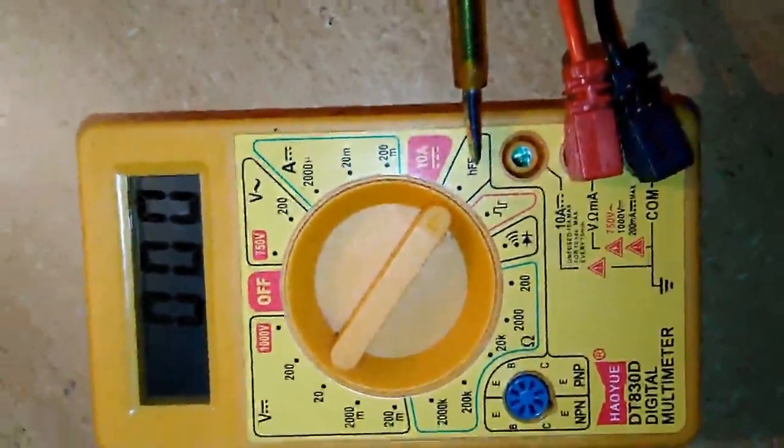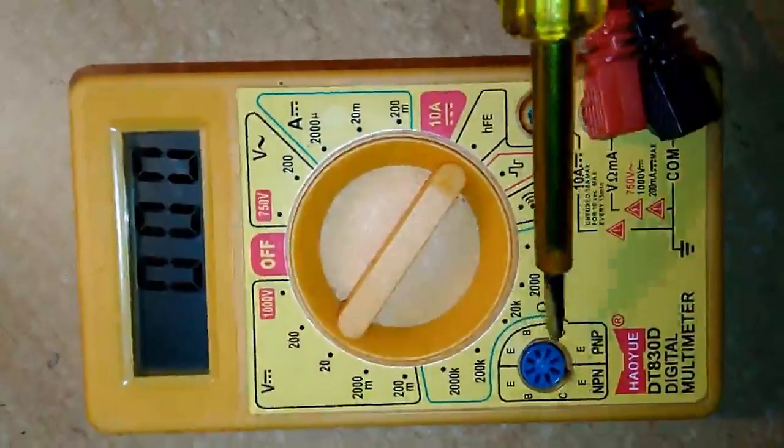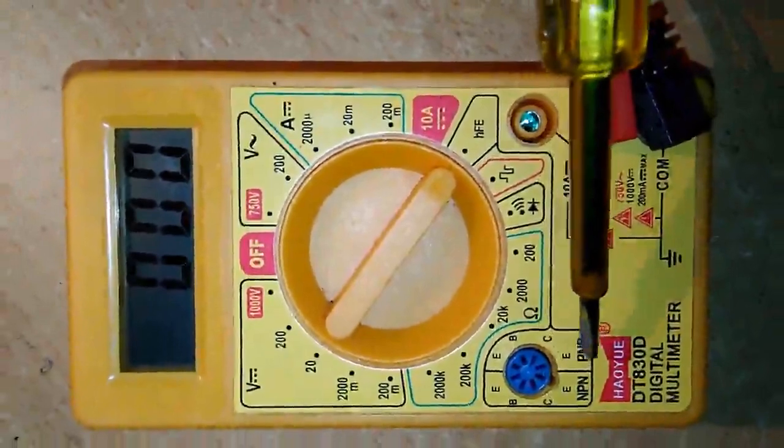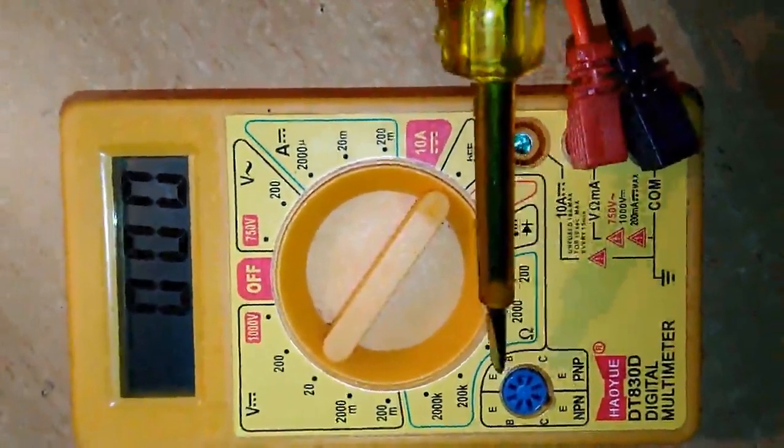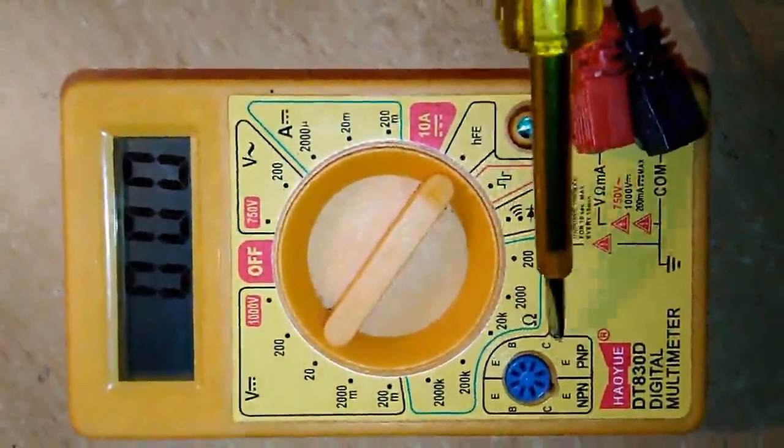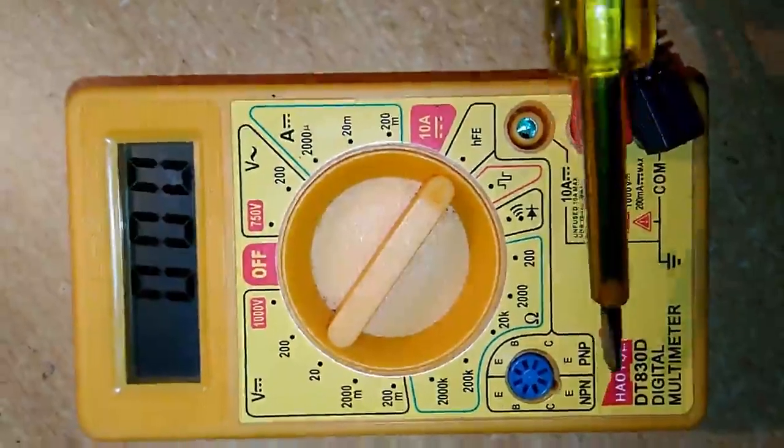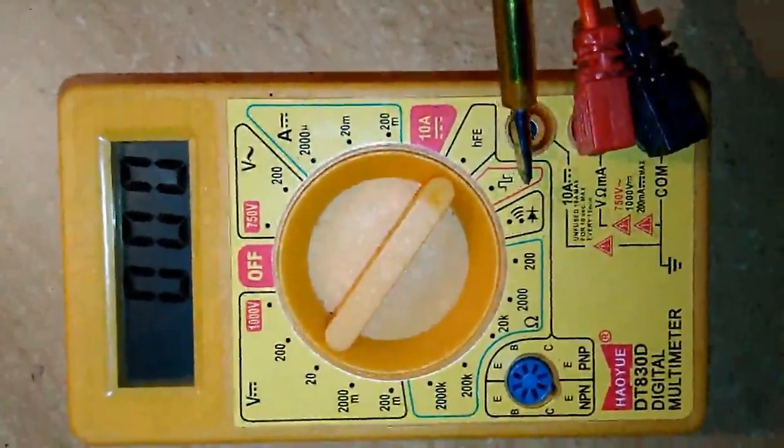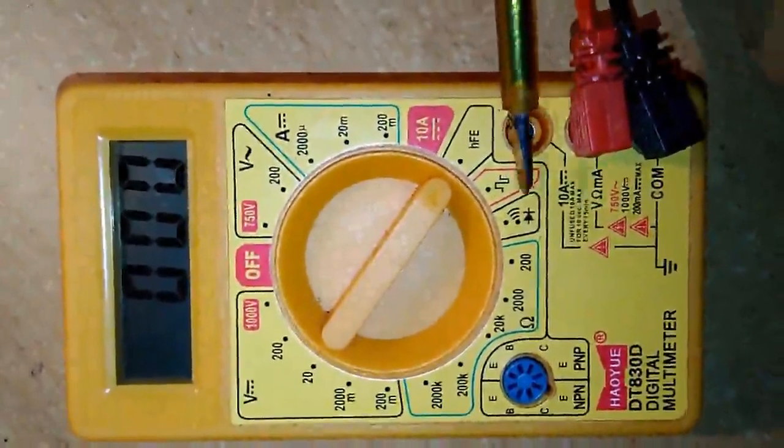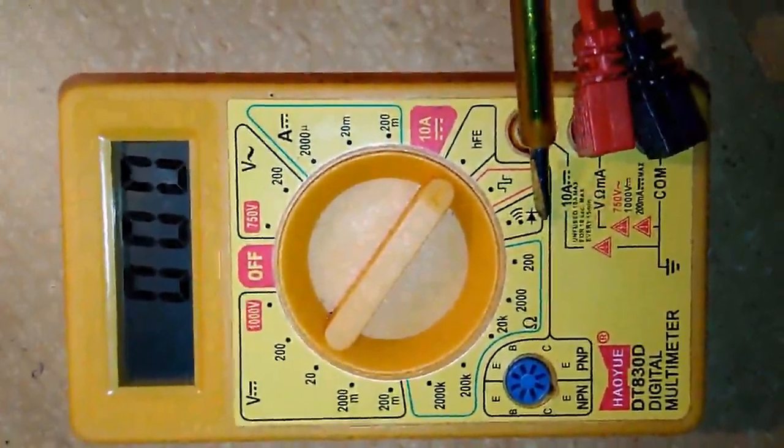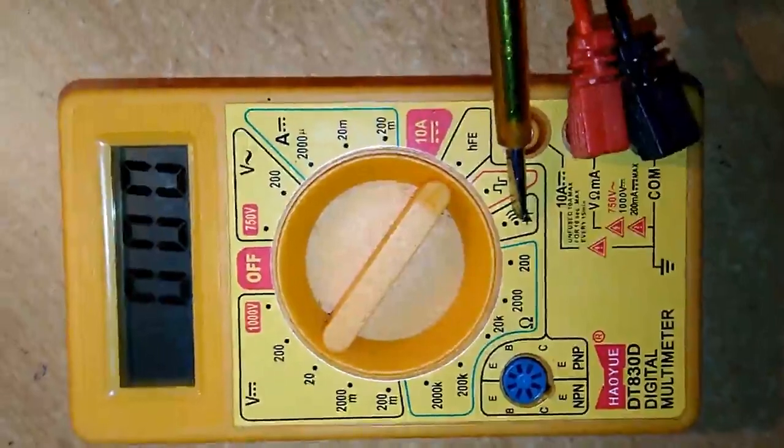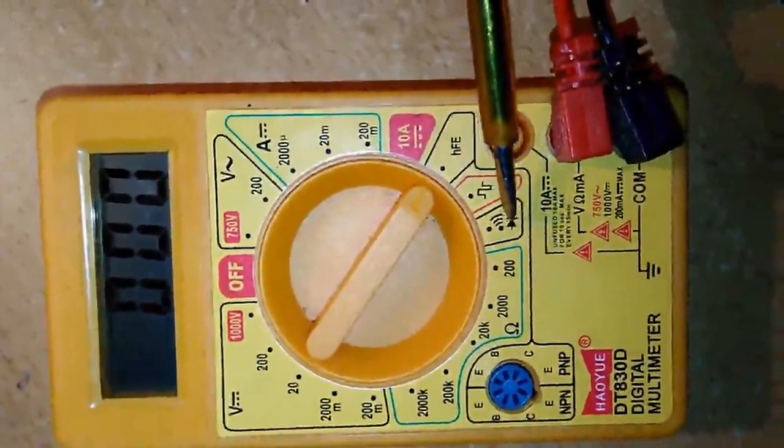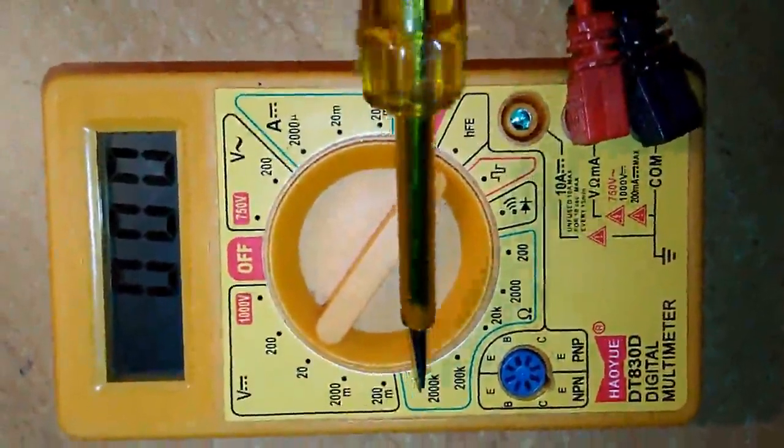Here HFE measures the value of transistor beta, that is current gain. We can measure the value of transistor by putting its legs - emitter, base, collector. We can measure NPN as well as PNP. This is the signal generator. Here we can measure if the diode or LED is working or not, and also the continuity of wire.